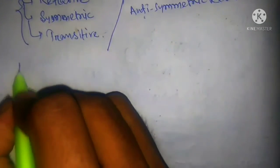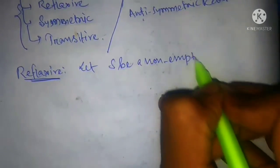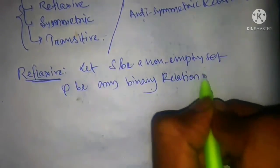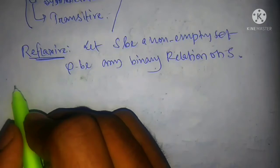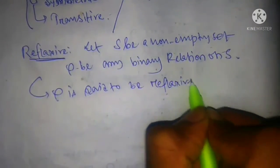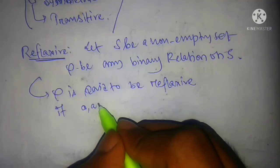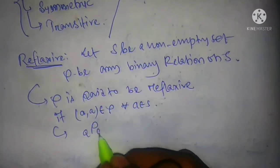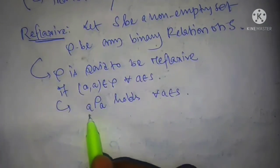Now we define reflexive relation. Let S be a non-empty set and Rho be any binary relation on S. The relation Rho is said to be reflexive if, for every element a in S, the ordered pair (a, a) belongs to Rho — that is, a is related to a holds for all a belonging to S.